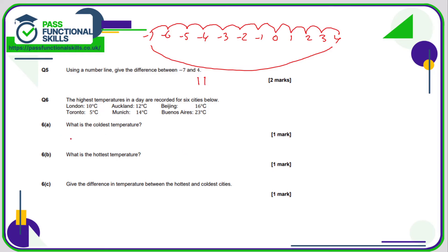In question number 6, the coldest temperature is going to be the city that has the lowest number of degrees Celsius. There are no negatives here, so this is nice and easy. 5 is the only number which is a single digit number, so therefore Toronto has the coldest temperature. The hottest temperature: 10, 12, 14, 16, 23. 23 is the biggest, so the hottest city is Buenos Aires.